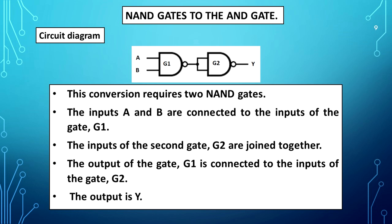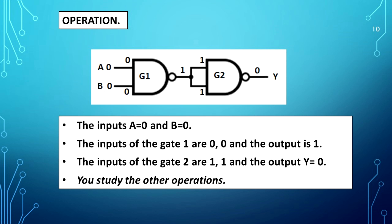NAND gates to AND gate circuit diagram is shown. This conversion requires two NAND gates. Inputs A and B are connected to the inputs of gate G1. The inputs of the second gate G2 are joined together, and the output of G1 is connected to the inputs of G2. The output is Y. Operation: When A=0 and B=0, the inputs of G1 are 0,0 and the output is 1. The inputs of G2 are 1,1 and the output Y equals 0.